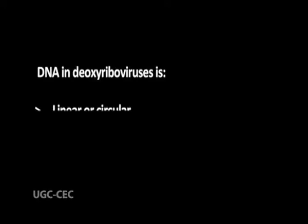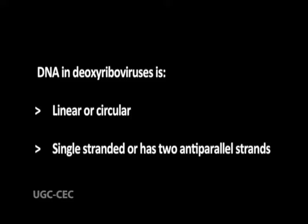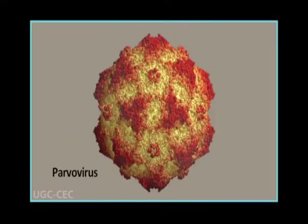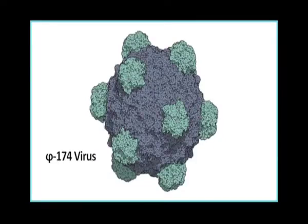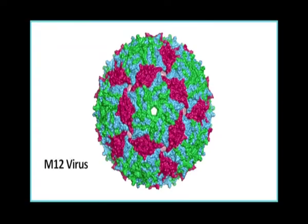The second group of viruses is called deoxyriboviruses. This group includes those viruses which have DNA as genetic material. This DNA is either linear or circular, and either single-stranded or has two anti-parallel strands. One group is deoxyriboviruses with single-stranded DNA. The best examples of this class are phiX174 virus, S13 virus, M12 virus, etc.